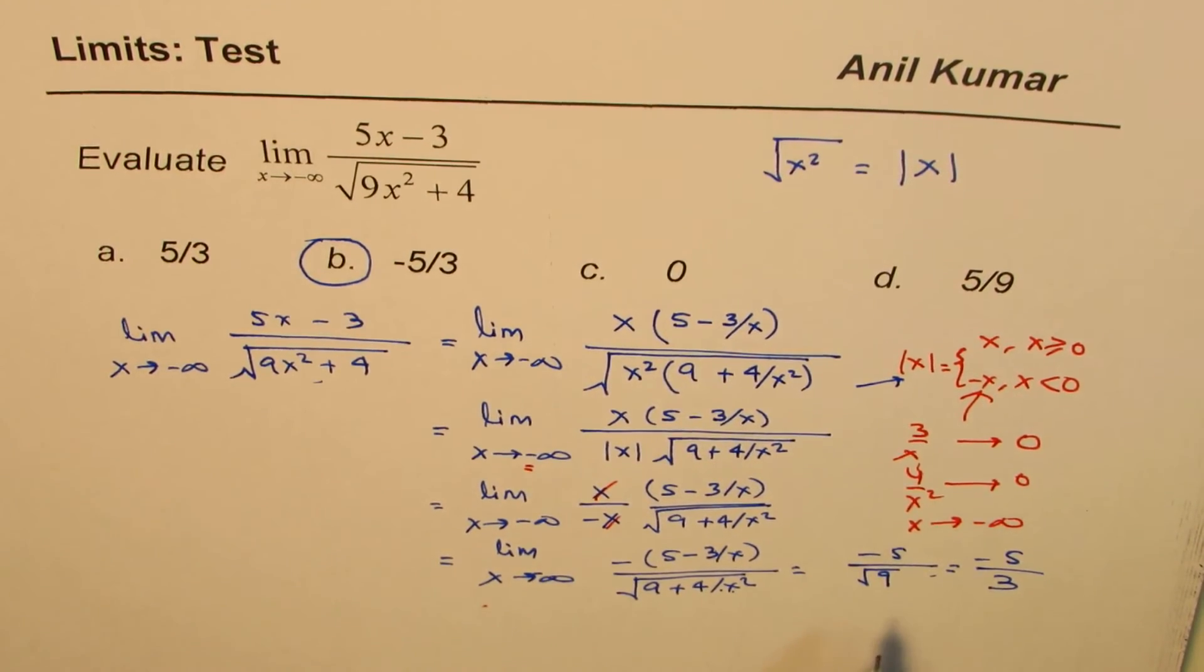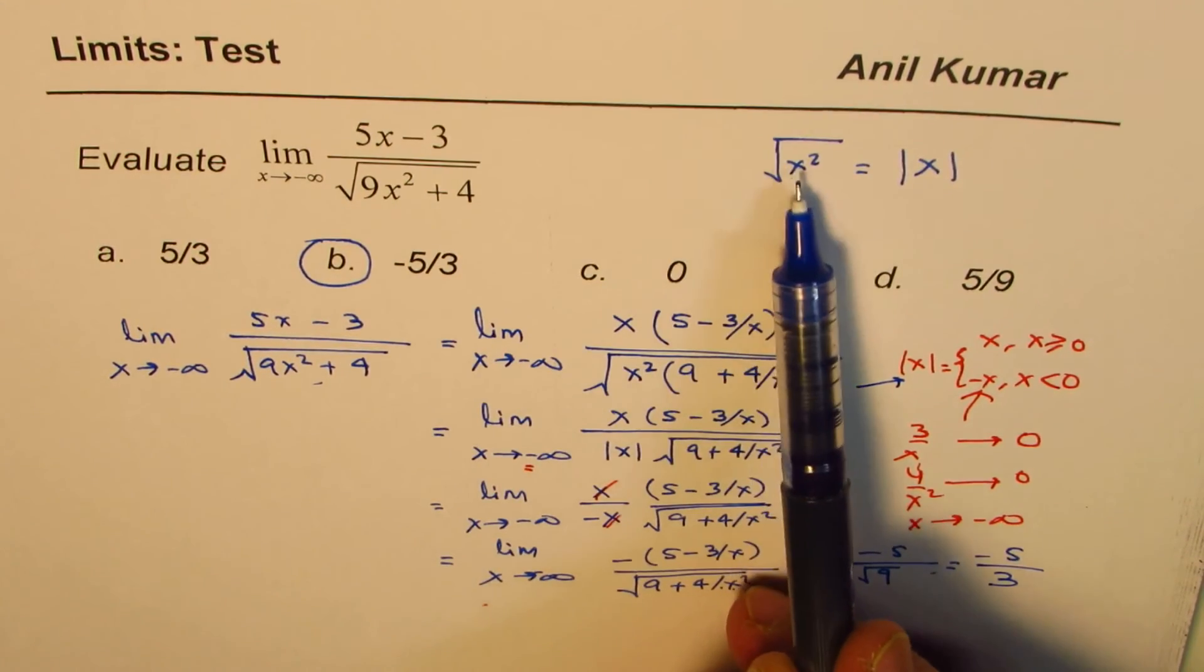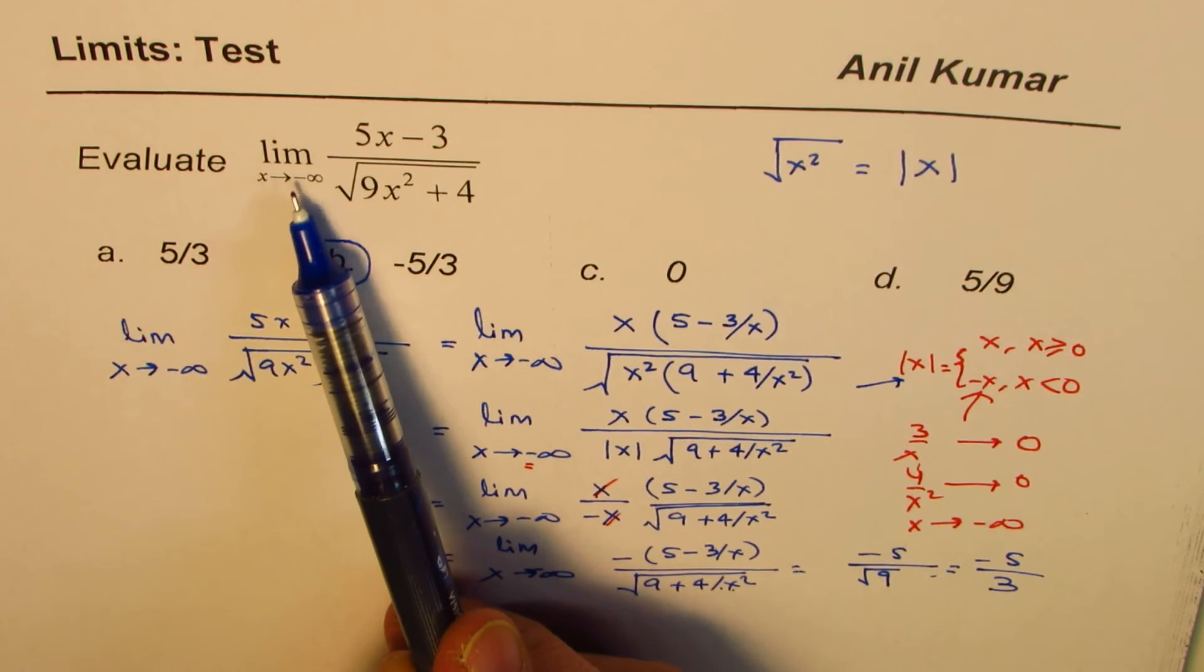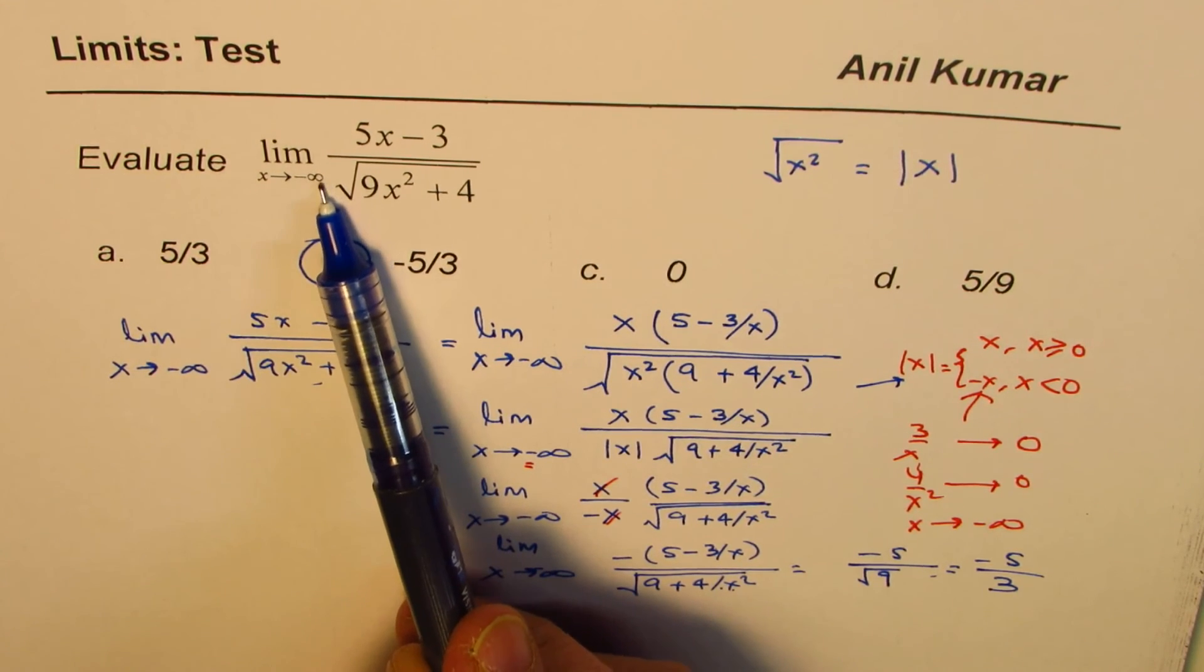Now, quick way of doing is, of course, when you have these, you should know square root of x square is positive x. Since it is going to negative infinity, we take negative value. That's one thing.